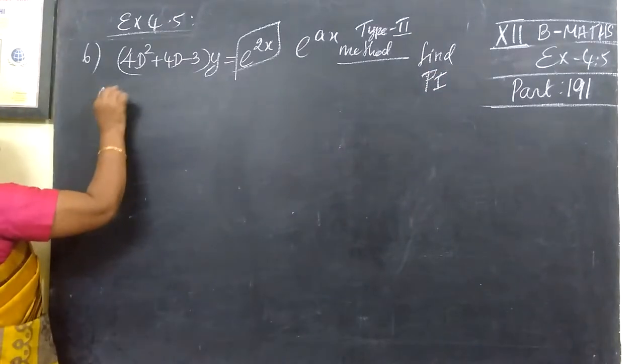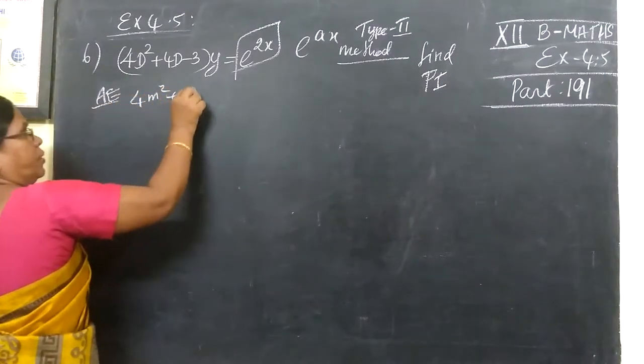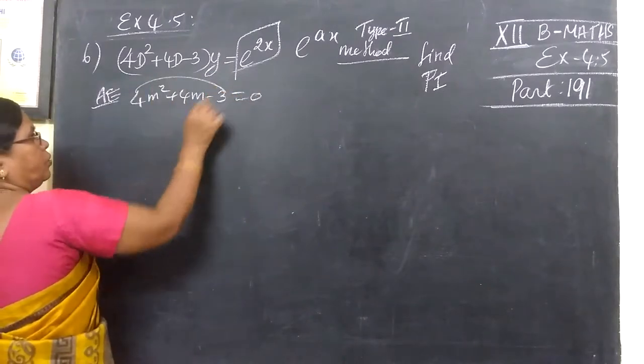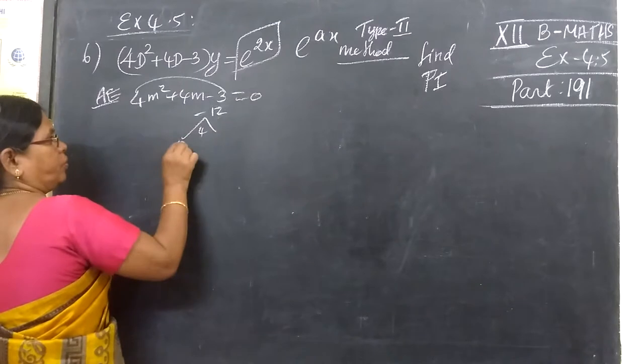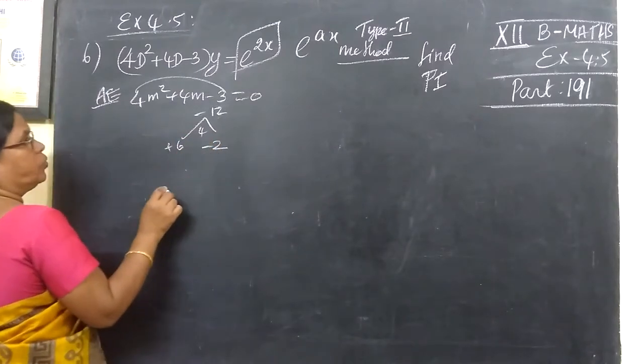First, we have to add the equation 4m² plus 4m minus 3 equal to 0. So multiply the minus 2, add the 4. So this is 2, plus 3 minus 2.